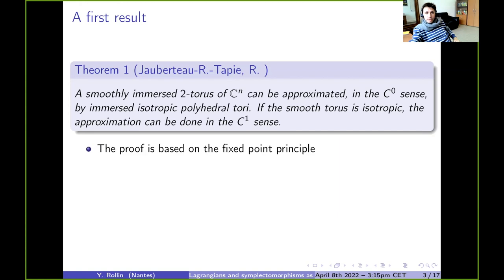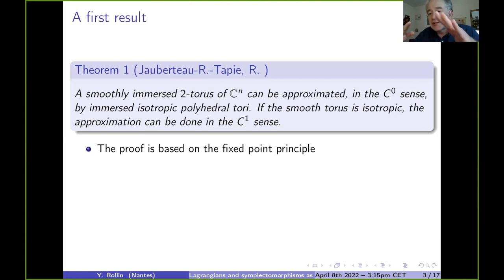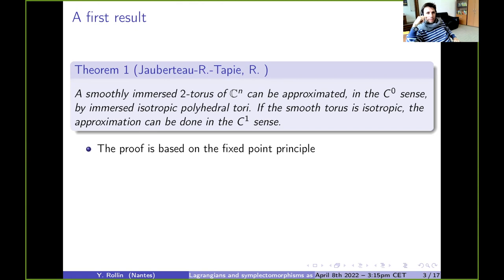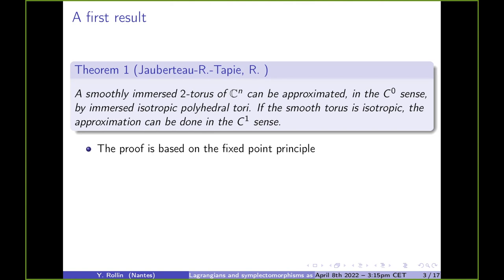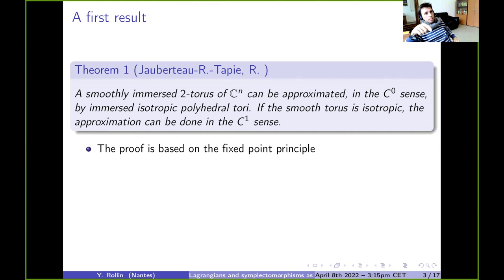Let me make some remarks about the proof — just a sketch of ideas. The definition of immersed isotropic polyhedral tori: the isotropic condition is on the faces of higher dimension only, no conditions on lower-dimensional cells. Well, there is a condition coming from the boundary, by integration — by Stokes' theorem: the integral of the Liouville form on the boundary of each face has to be zero.